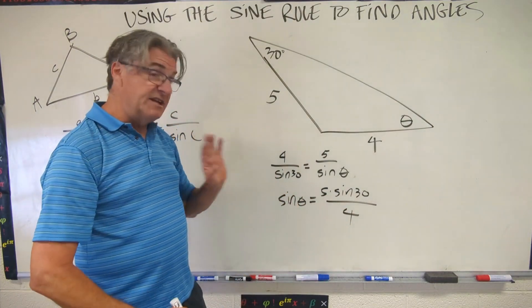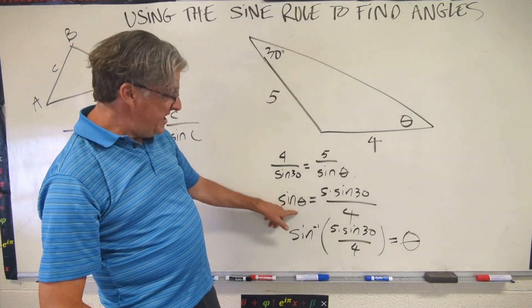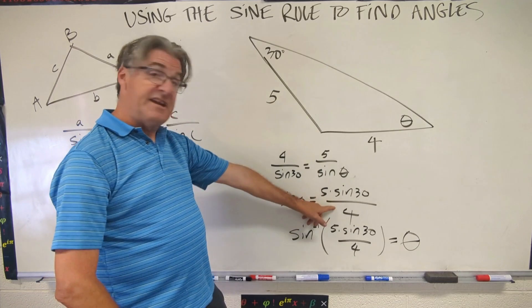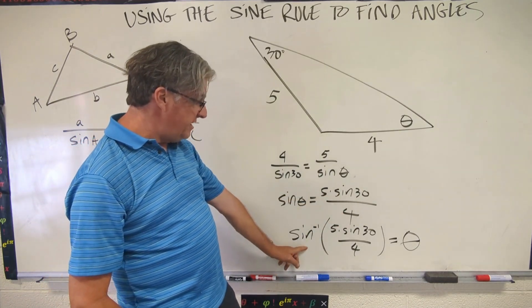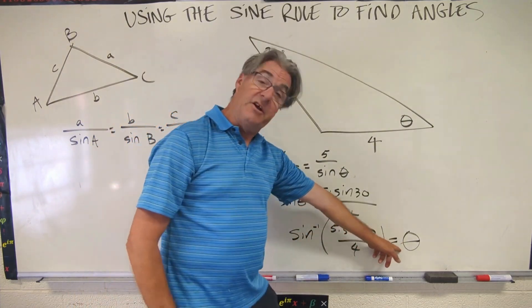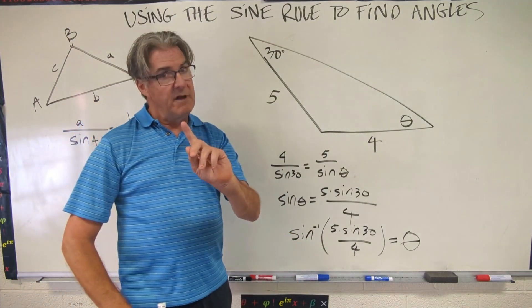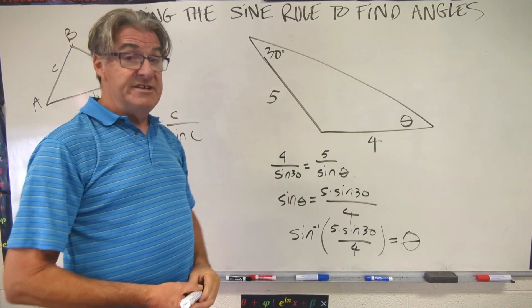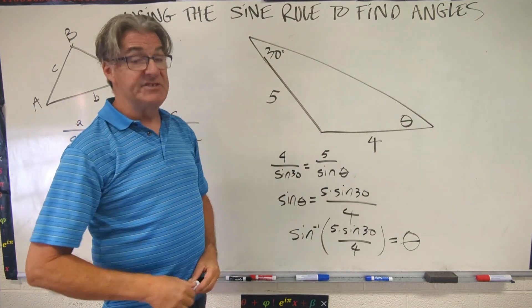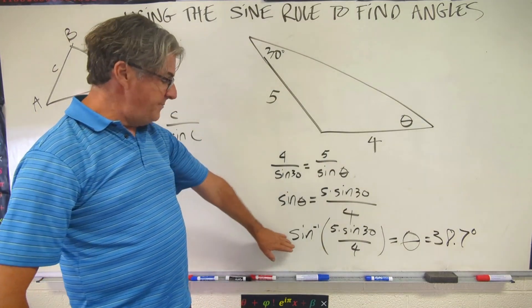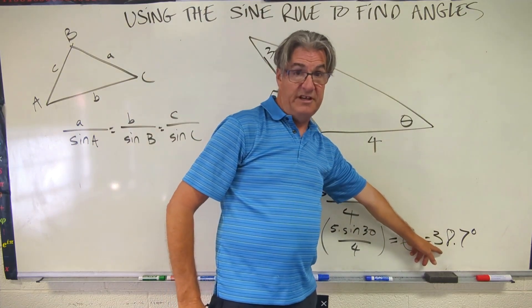Now pause the video and write the next step. Okay. So my next step is if theta is that, or if sine theta is that, then sine inverse of that is theta. So I wrote sine inverse of 5 times sine 30 over 4 equals theta. So go ahead and pause the video, get out your calculator and do that. And I want to ask you, try to do this in one series of steps without having to write anything down, and then round your answer at the very end. Okay, let's see how you did. When I put that into my calculator, I get theta equals 38.7 degrees. Alright.